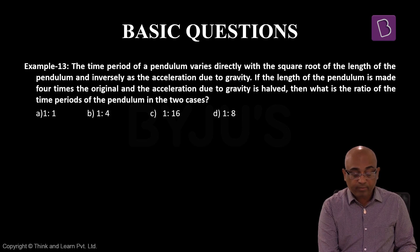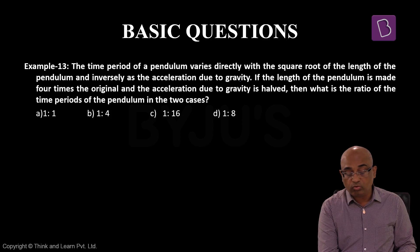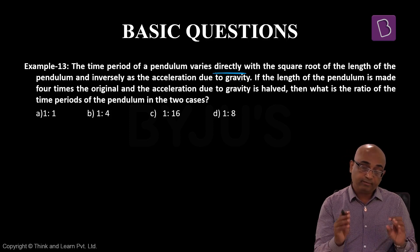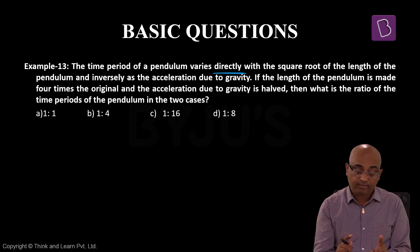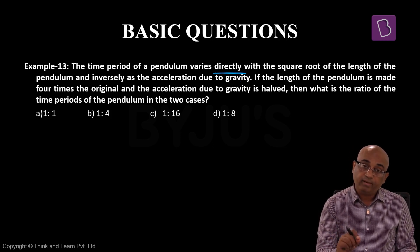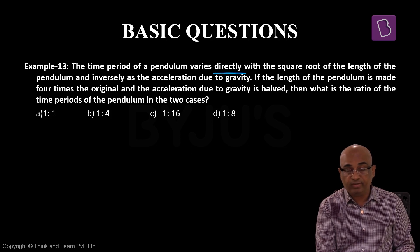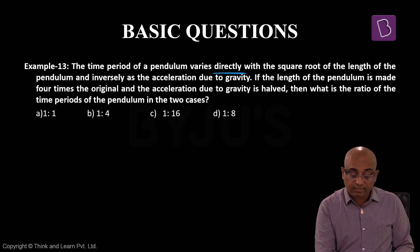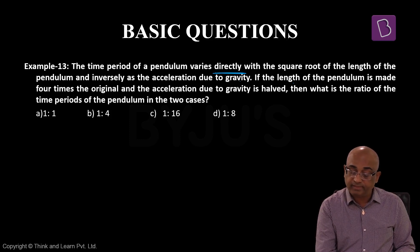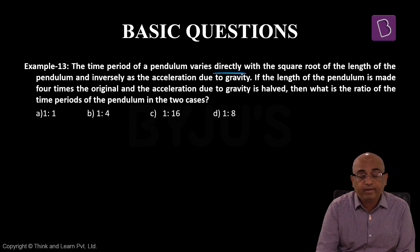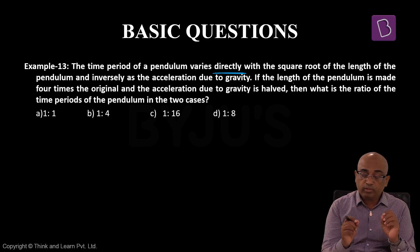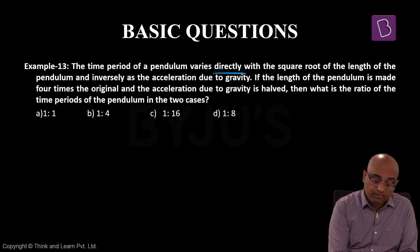Question में दिया है एक pendulum का जो time period है वो उस pendulum के square root of length के directly proportional है। Time period और length of the pendulum के बीच में संबंध है कि time period जो है लंबाई के वर्गमूल के अनुक्रमानुपाती है। और time period acceleration due to gravity के व्युत्क्रमानुपाती है। Question में directly proportional और inversely proportional दोनों ideas हैं।